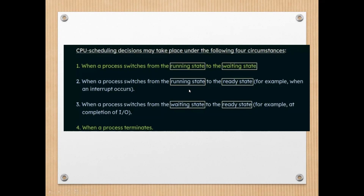The second circumstance is when a process switches from the running state to the ready state — for example, when an interrupt occurs. If some interrupt or hardware issue occurs while a process is running in the CPU but it doesn't require any input-output resources, that process will be kept in the ready queue, not the waiting queue, because it is not waiting for any resources.